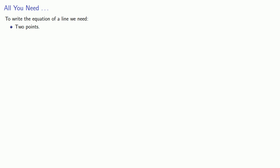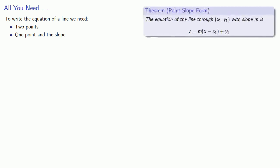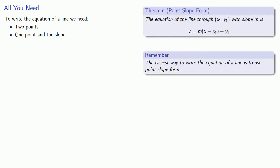But actually, the first thing that we do when we have those two points is to find the slope of the line, and so what we really need to write the equation of a line is one point and the slope. And as soon as we have that, we can write the equation of the line in point-slope form. And it's worth remembering that the point-slope form is the easiest way to write the equation of a line.